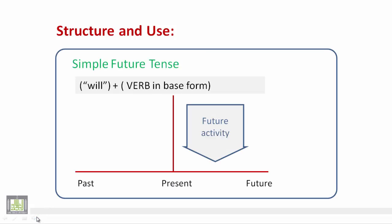Now, let's start by reviewing the structure and use, how it is constructed, how it is formed, and how it is used. The simple future tense is constructed by the use of the auxiliary will plus verb in its base form, or what we call verb one.